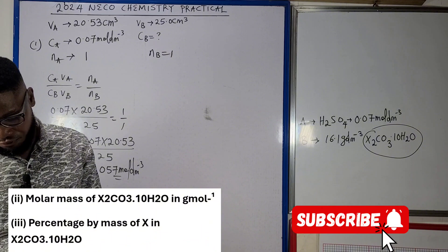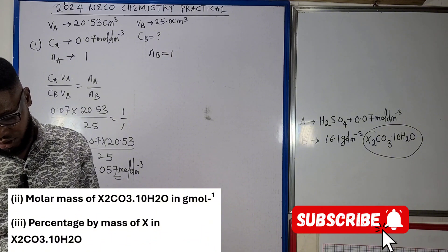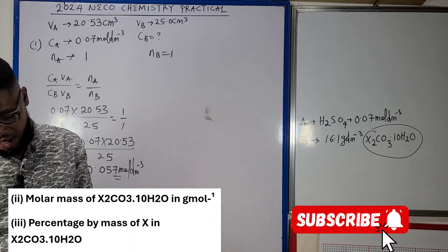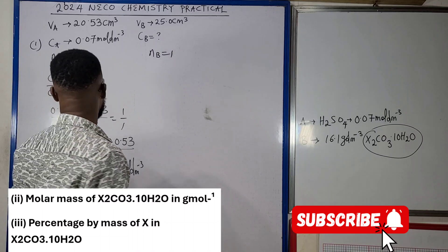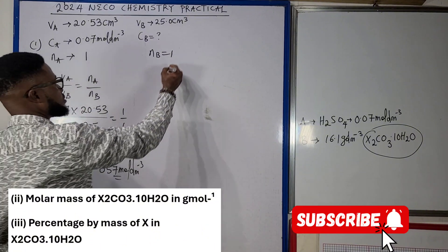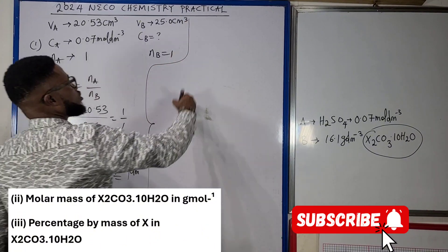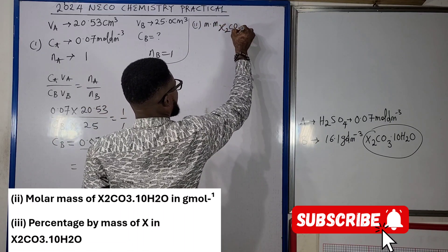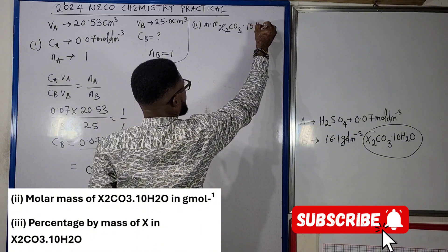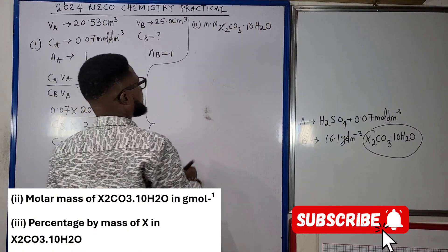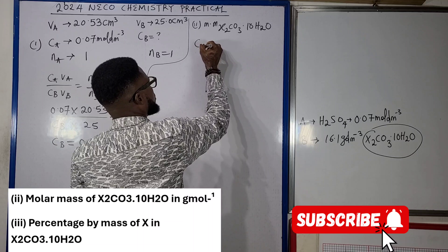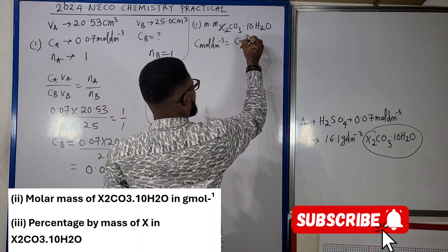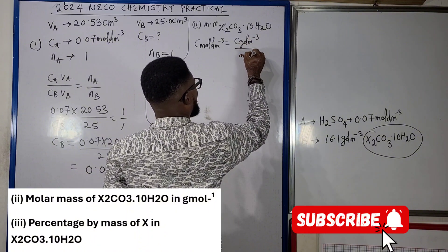That way we'll say we've been able to answer the very first question talking about B1. Then we're told to look for the molar mass of X2CO3.10H2O in gram per mole. Now talking about B2, we're told to look for the molar mass of X2CO3.10H2O.